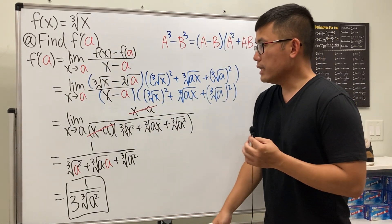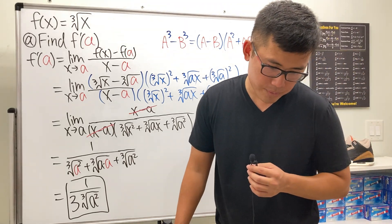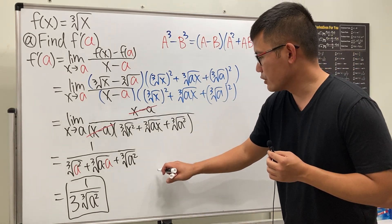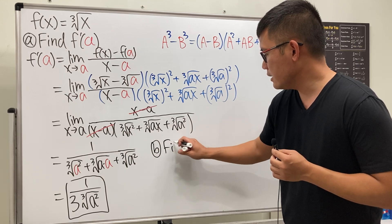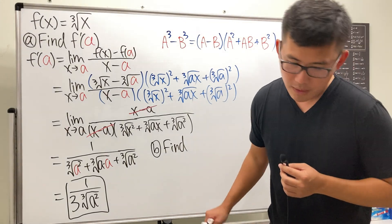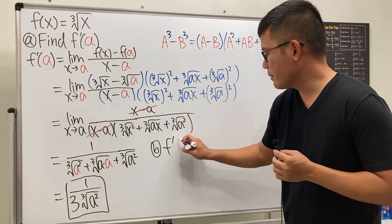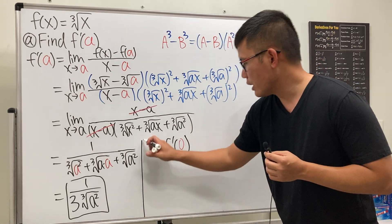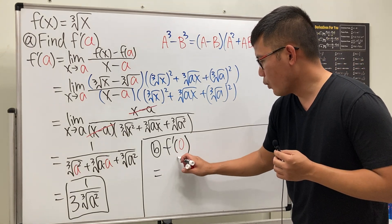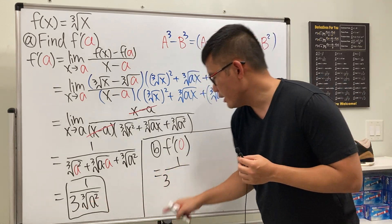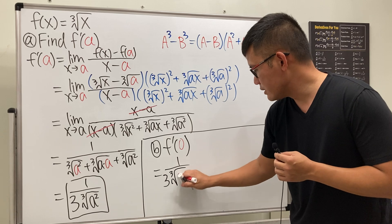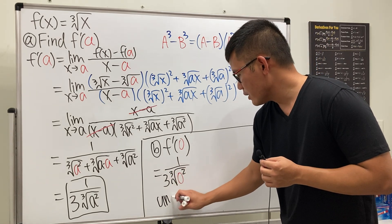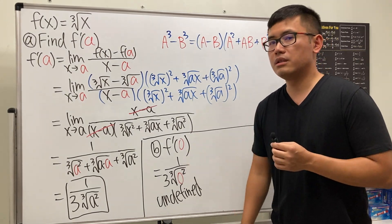So we have found the derivative: f prime of a equals one over three times the cube root of a squared. That's part a. For part b, we look at f prime of zero. We already have the formula, so we plug zero into a: we get one over three times the cube root of zero squared, which is zero on the bottom — that's undefined, meaning the derivative does not exist at zero.